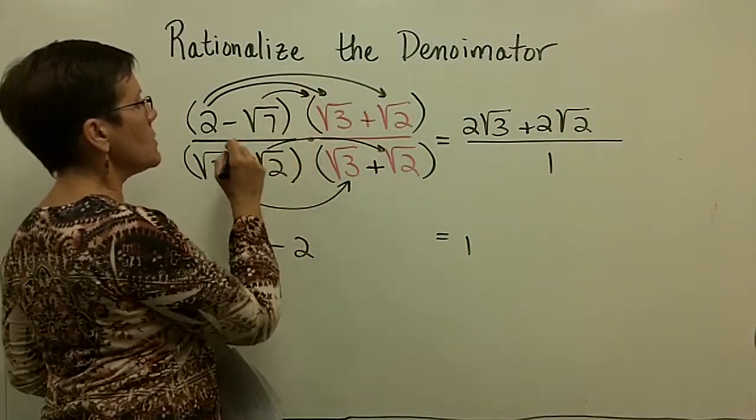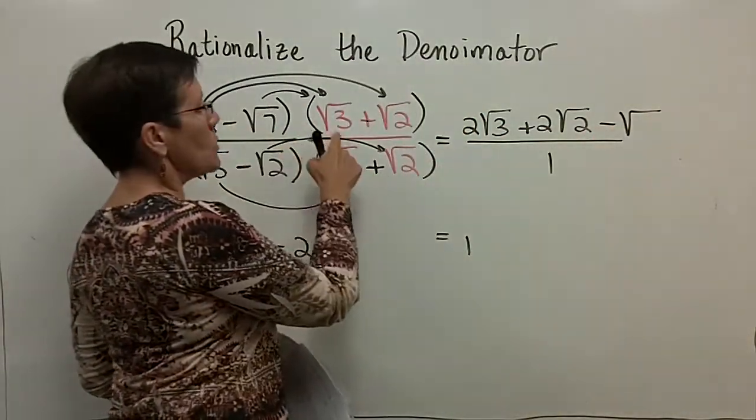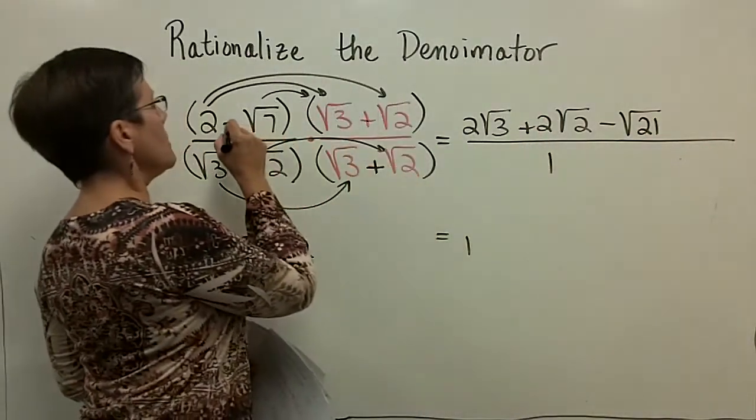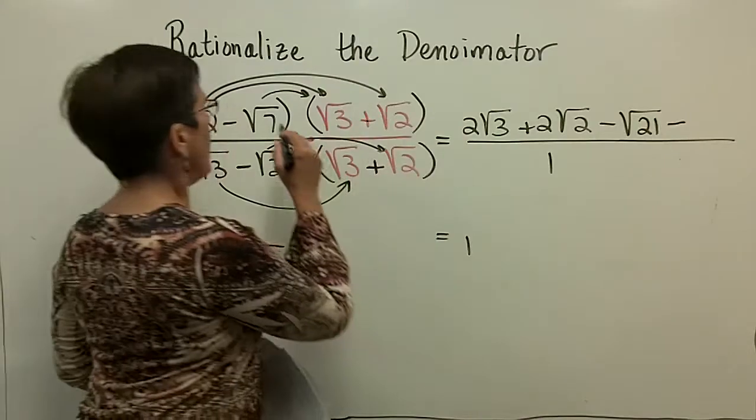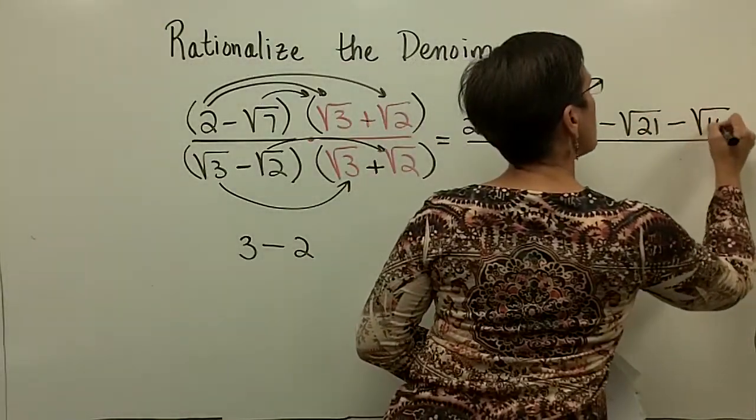Those are my inner terms, so a minus square root of 7 times the square root of 3 is the square root of 21. And then finally, this minus sign times this plus sign is a minus, and square root of 7 times the square root of 2 is the square root of 14.